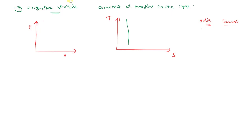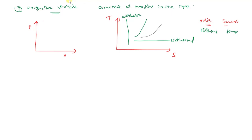For an isothermal process, temperature is constant and temperature is one of the axes, so an isothermal process is a straight line parallel to the entropy axis. An adiabatic process is a vertical line parallel to the temperature axis. Isochoric and isobaric processes each have their characteristic curve shapes on the TS diagram.